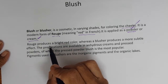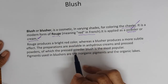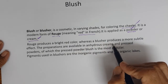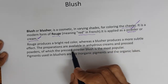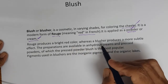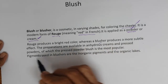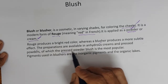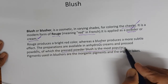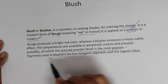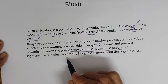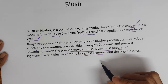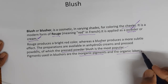Rouge produces a bright red color whereas a blusher produces a more subtle effect. The preparations are available in anhydrous creams and pressed powders, of which the pressed powder blush is the most popular. Pigments used in blushers are inorganic pigments — that is iron oxide pigments — and organic lakes.